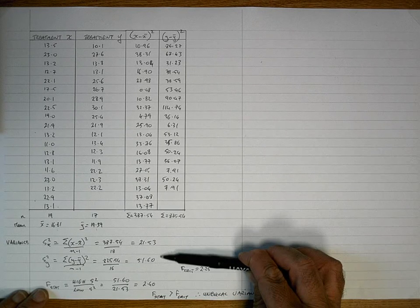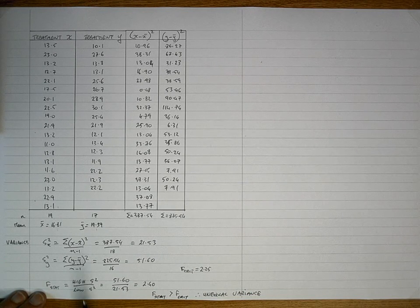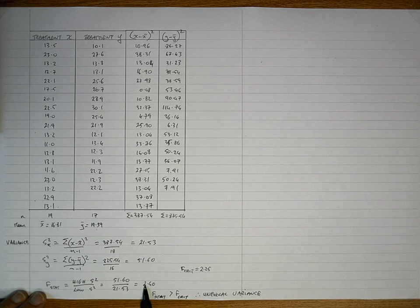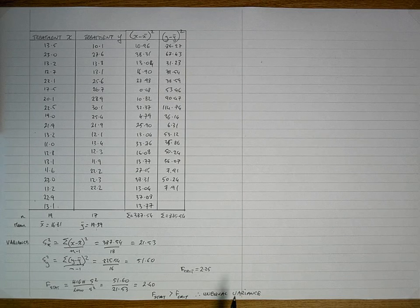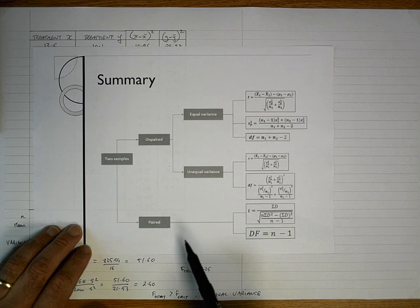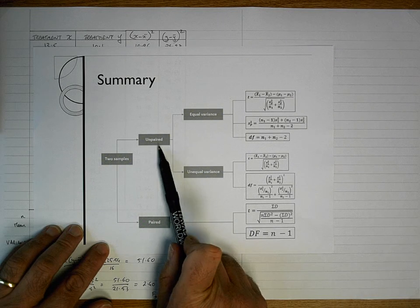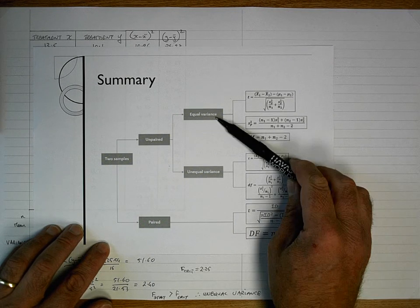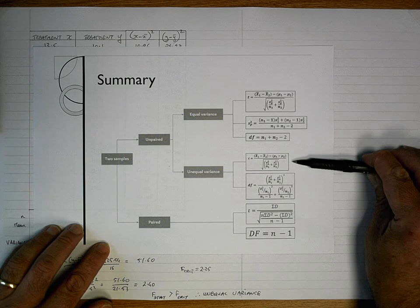There's quite a considerable difference between the variances. To test whether this difference is significant — indicating unequal variance — we calculate an F statistic by dividing the highest variance by the lowest: 51.6 divided by 21.53 gives 2.40. From the F distribution table the critical value is 2.25. Since our F statistic of 2.40 is greater than the critical value, we assume unequal variance. This is important because it determines which t-test formula we use: for unpaired data with unequal variance, we use the Welch's t-formula along with its more complex degrees of freedom calculation.